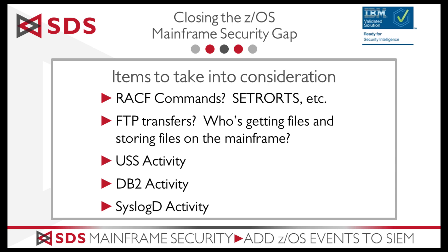USS activity — there are a lot of products these days that exploit USS, and there are some powerful commands. The change ownership command (chown) and the change mode command (chmod) are two that spring to mind — you may want to monitor those. Turn those on so you can get visibility. But remember, this is one I would advise caution with: don't just open the floodgates because it can be pretty chatty. This is the SMF-92, and it generates a lot of records and a lot of activity.